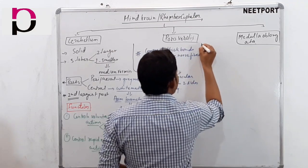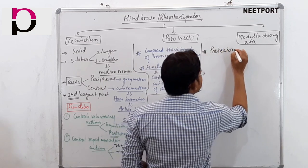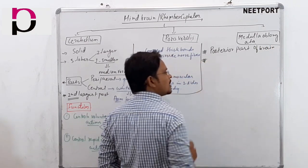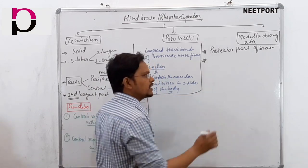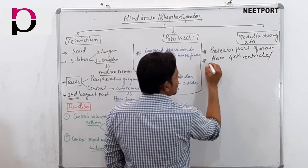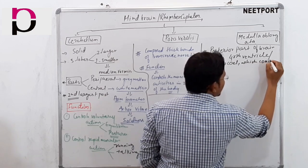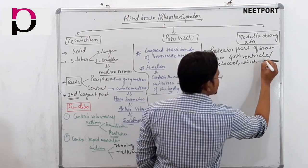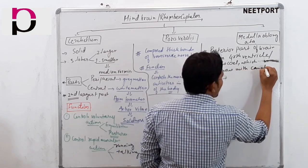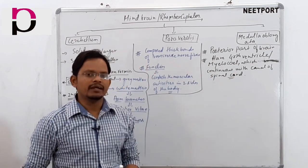Next is medulla oblongata. Medulla oblongata is the posterior part of the brain. An important point is that it has a fourth ventricle, also called mylocele, which is continuous with the canal of the spinal cord.